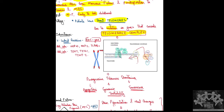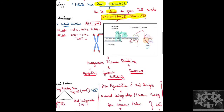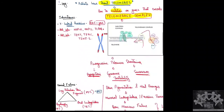Telomerase is not a single enzyme but a telomerase enzyme complex. If there are mutations in the genes that encode this complex, abnormal proteins are produced, altering the expression of telomerase-related proteins and leading to pathology.